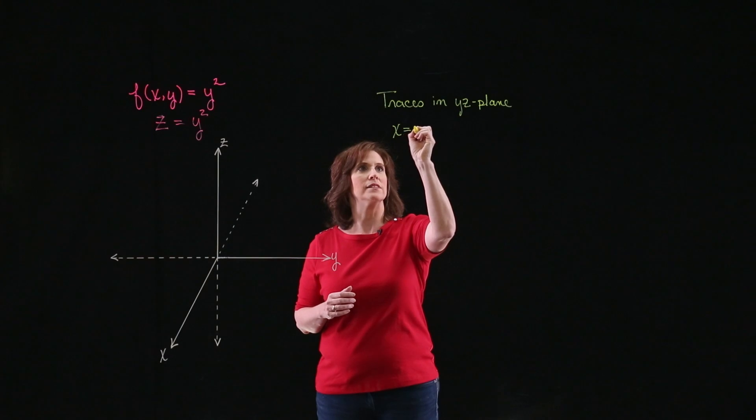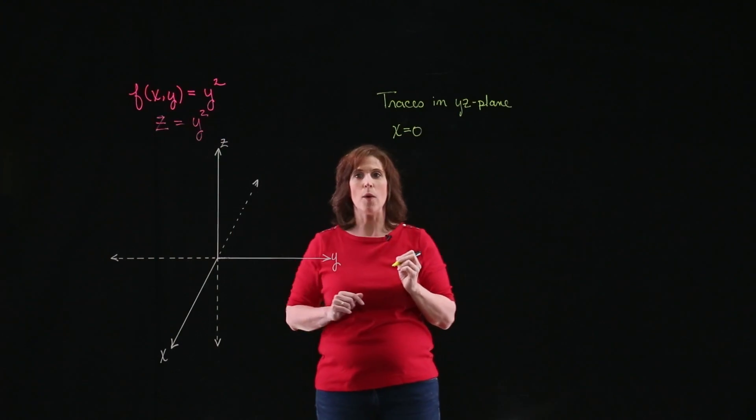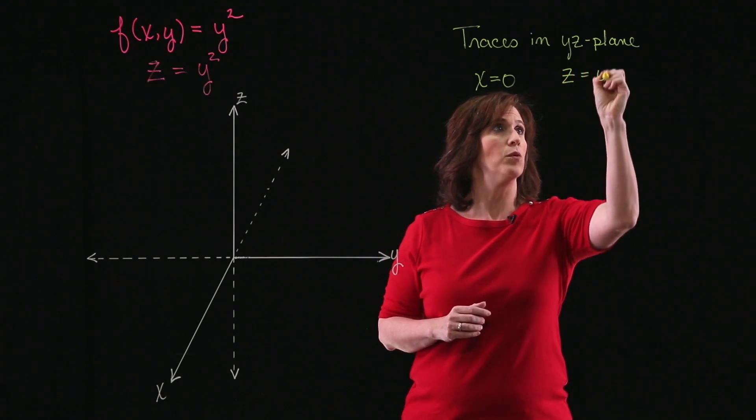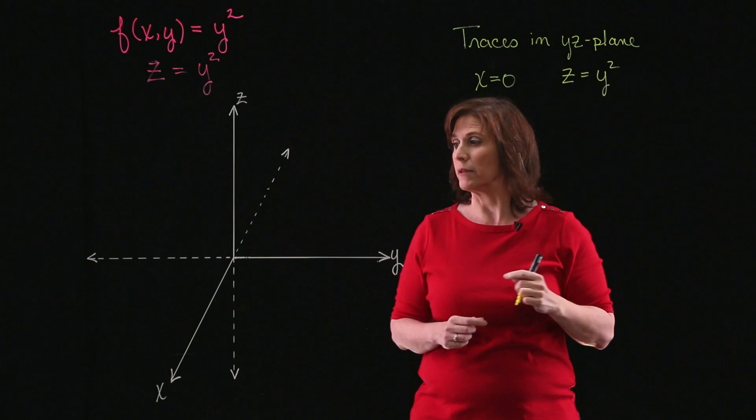Let's just try a couple. Let's say that x equals 0. If x equals 0, what does my equation look like? Well, it looks like z equals y squared, which I know is a parabola.